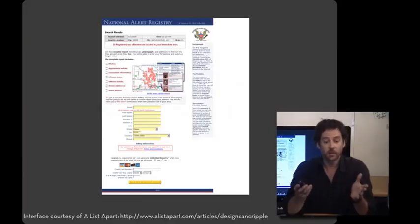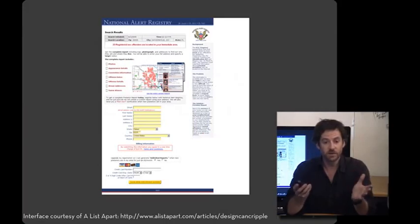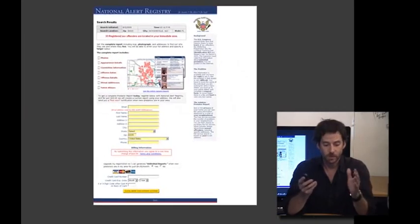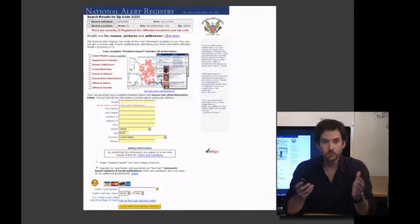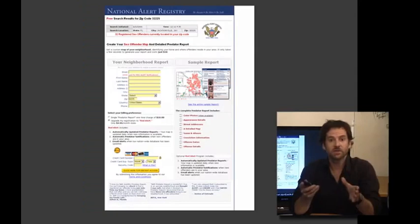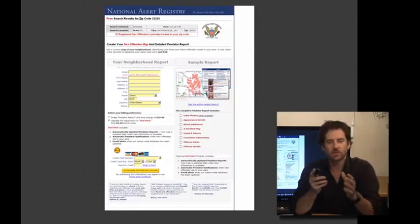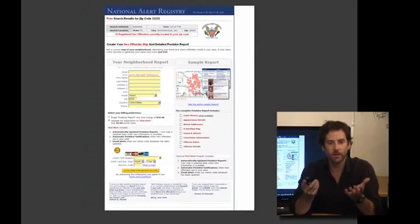Let's start with an example. Here's a website for the National Alert Registry, which provides information on sexual offenders. This is the first version of the site, here's a second version, and here's a third version. In this third version, it was changed to a two-column format. The intuition was to see whether getting more content above the fold on the first screen would help.